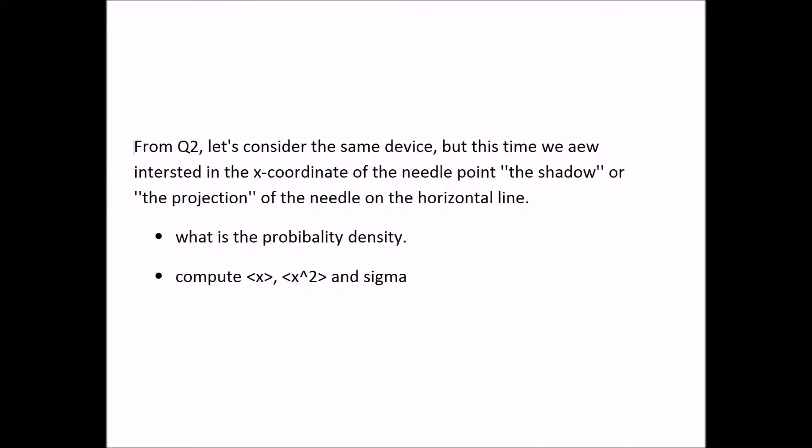From question number two, let's consider the same device but this time we are interested in only the x-coordinates of the needle point — that is, the shadow or the projection of the needle point on the horizontal line. So let's find the probability density, and then also let's find the expectation value of x, the average of x squared, and the standard deviation sigma.